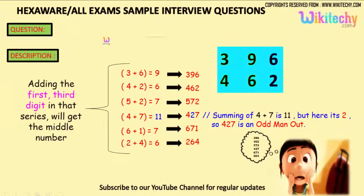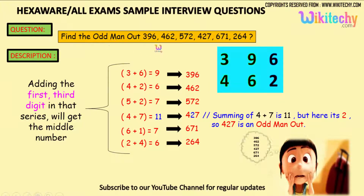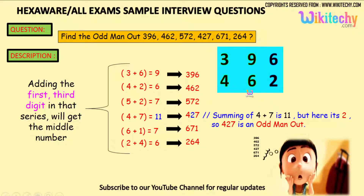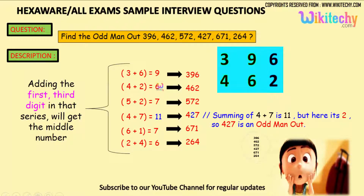So what is the logic? You are able to see — I have taken the first digit and the second digit. 3 plus 6, that's 9. Then 4, 6, 2 — 4 plus 2, it's 6. Adding the first and third digit in that series gives you the middle number.